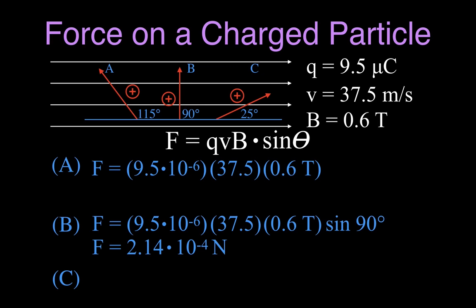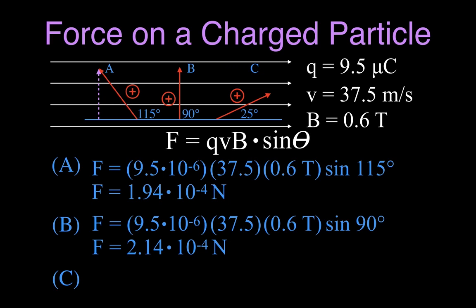Now let's do letter A. We have the same values Q, V, and B, but in this case theta is 115 degrees, so we multiply by the sine of 115. What we're doing when we multiply by the sine of theta is finding the component of the velocity vector that's perpendicular to the magnetic field — not all of the velocity is perpendicular to the magnetic field, but this portion is. We multiply by the sine of 115 and get that the answer is 1.94 times 10 to the minus 4 newtons, which is less than the perpendicular case of 2.14.